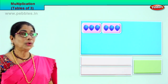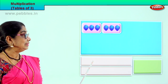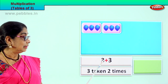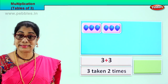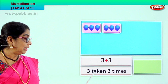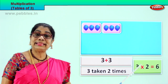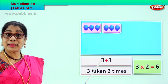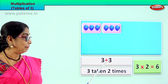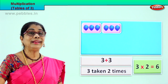Shall we go to the next grouping of three? Look what you have. One group of three, another group of three. Three plus three? Six. So three taken how many times? Two times. One set of three, two sets of three. That is three into two is six. Multiplication, repeated addition. Three plus three is six. Three taken two times, so we write three into two is six. Three twos are six.